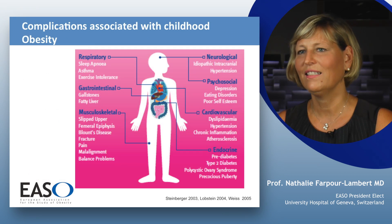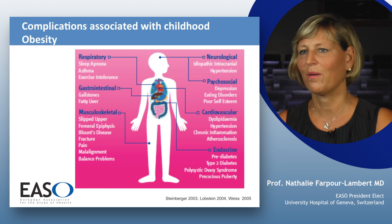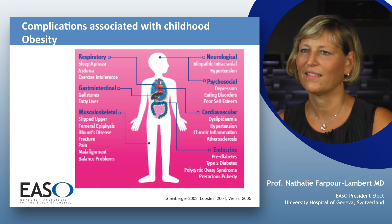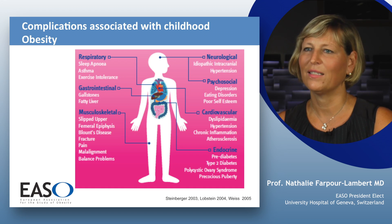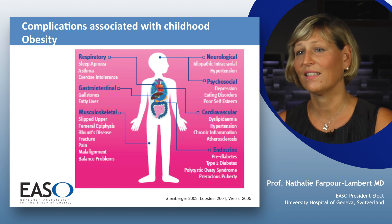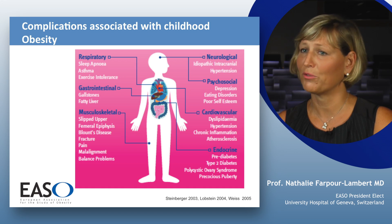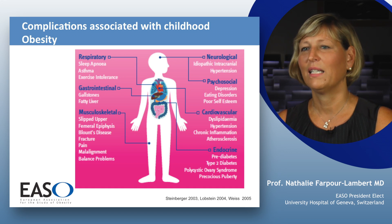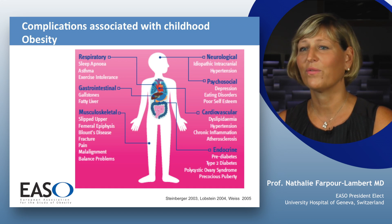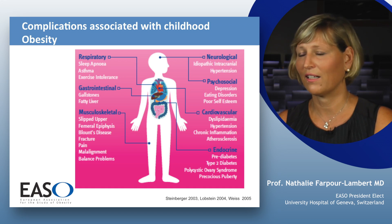Childhood obesity is associated with the premature development of chronic disease. We know that children with obesity may develop the first signs of cardiovascular disease. It has been shown that atherosclerosis may even develop before puberty. In addition, children with obesity may have insulin resistance and show the first signs of type 2 diabetes during adolescence.